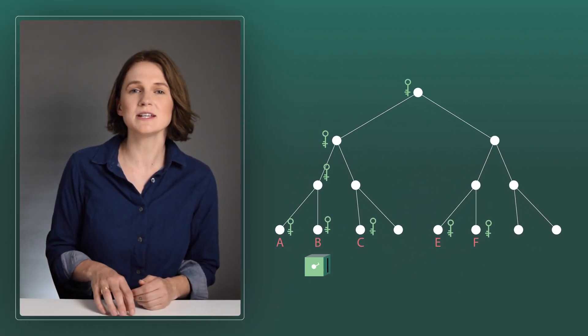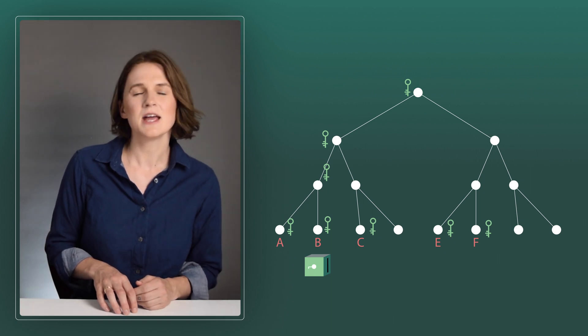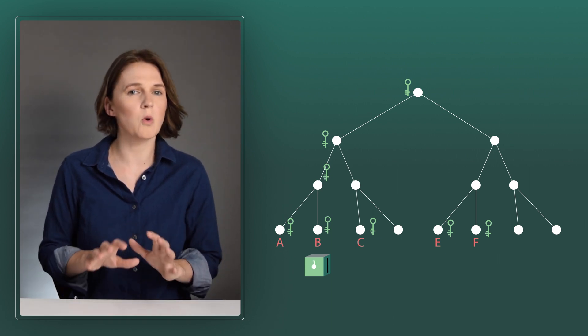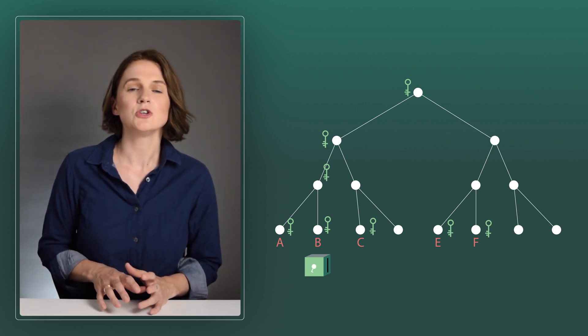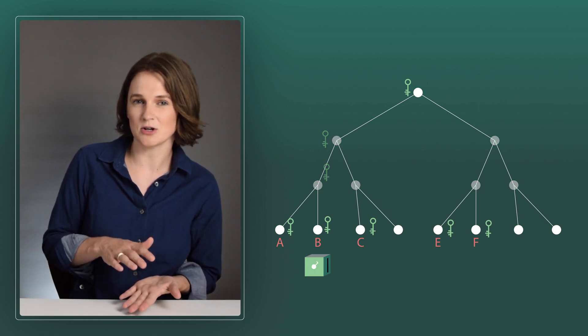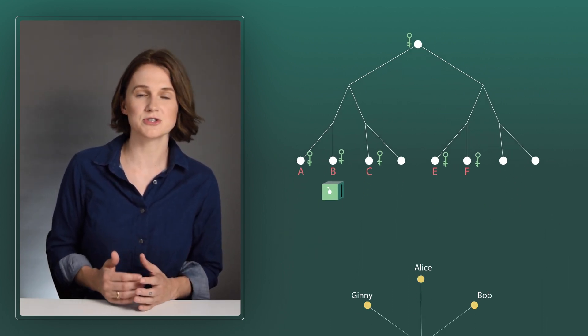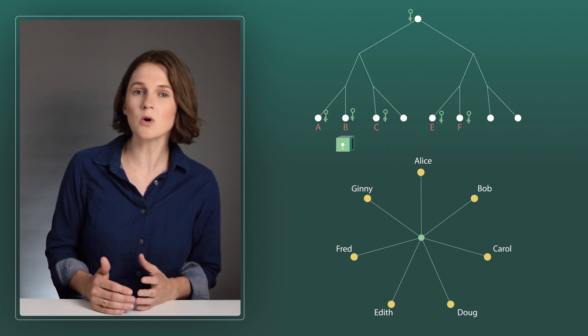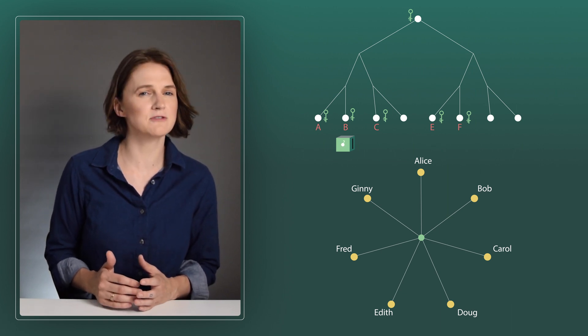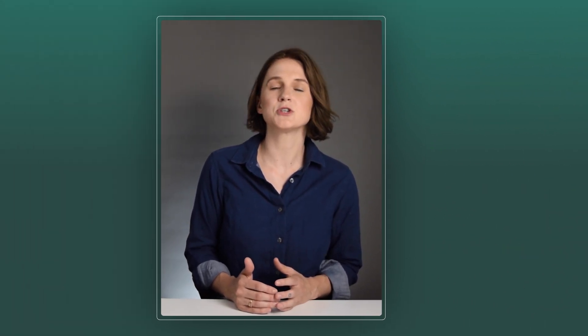Remember, this tree doesn't really exist anywhere — it's just a way to organize the information. You could leave all of the intermediate nodes blank, but then you'd basically be in the original star situation. The more blank nodes there are, the less efficient the system is. The tree is there to help structure the end-to-end encrypted group chat to securely and efficiently add and remove members.